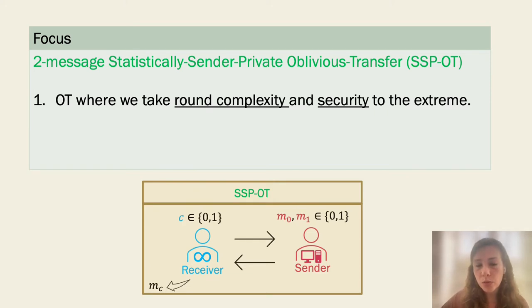It's a two-message protocol, meaning that each party is allowed to send only one message, and we consider the best possible security guarantees for such a protocol, meaning that the receiver's choice bit is kept computationally hidden, while the sender's second message is kept statistically hidden.